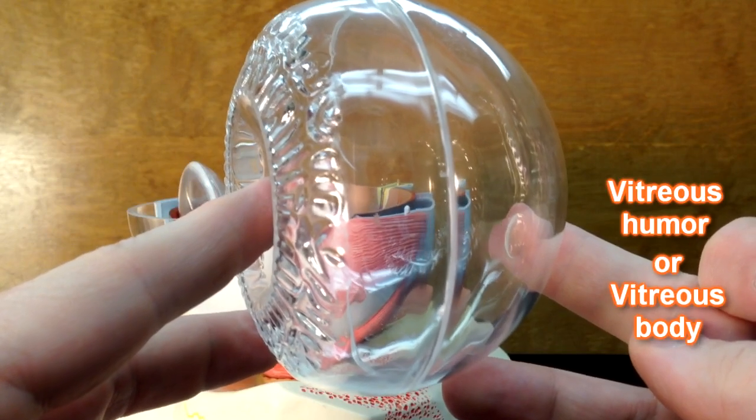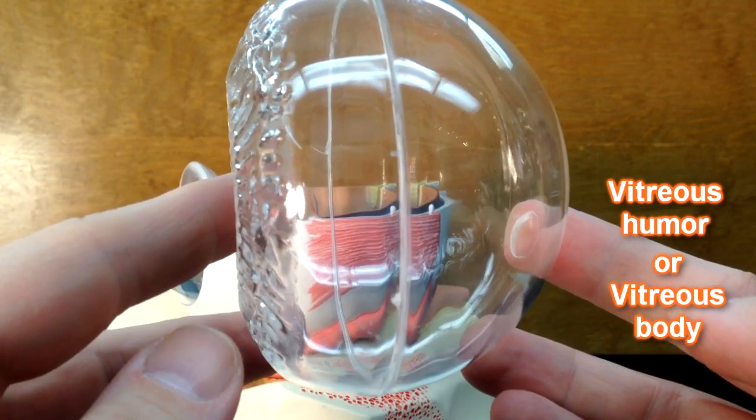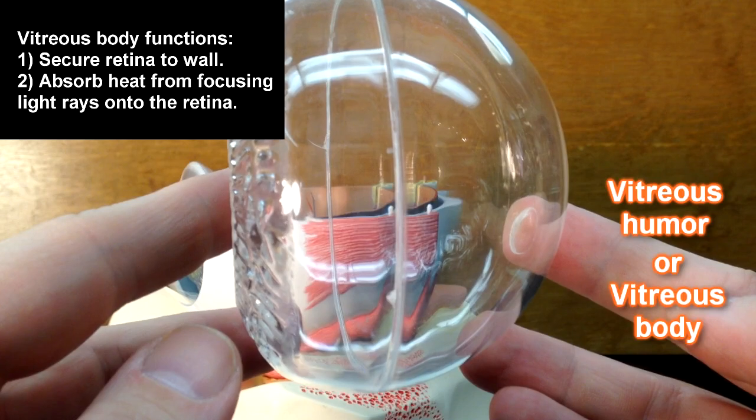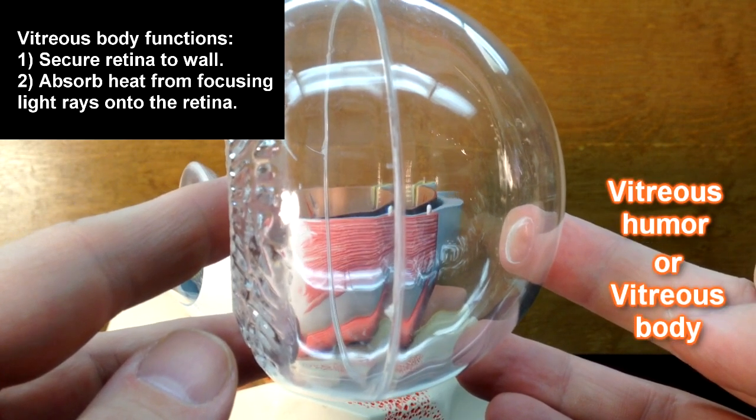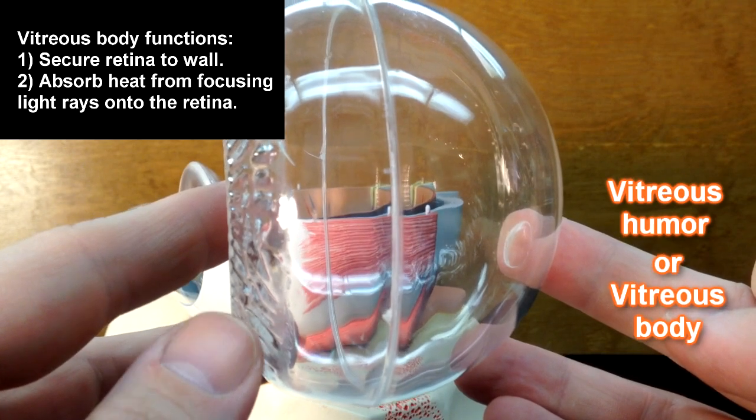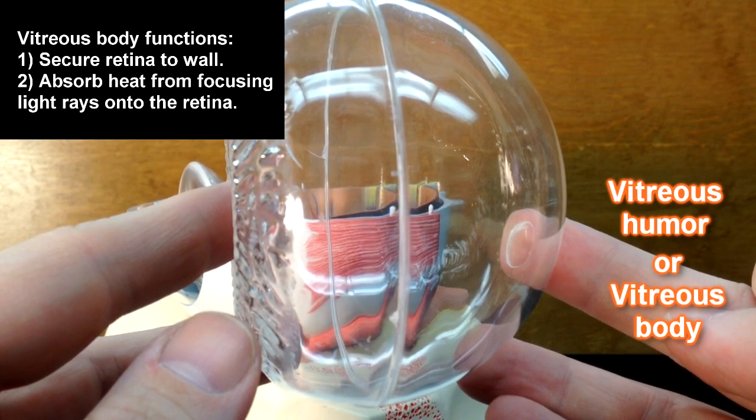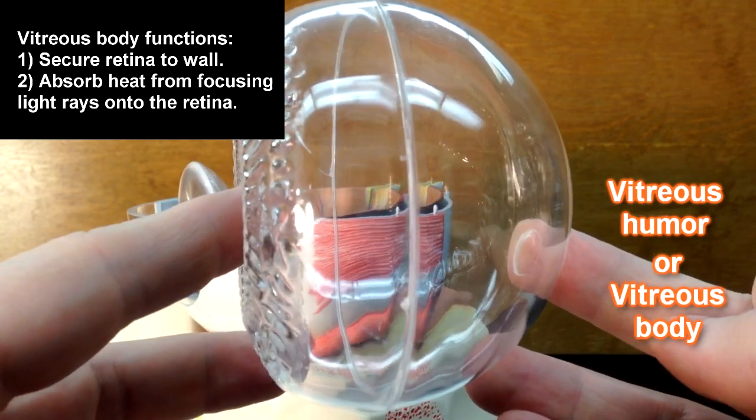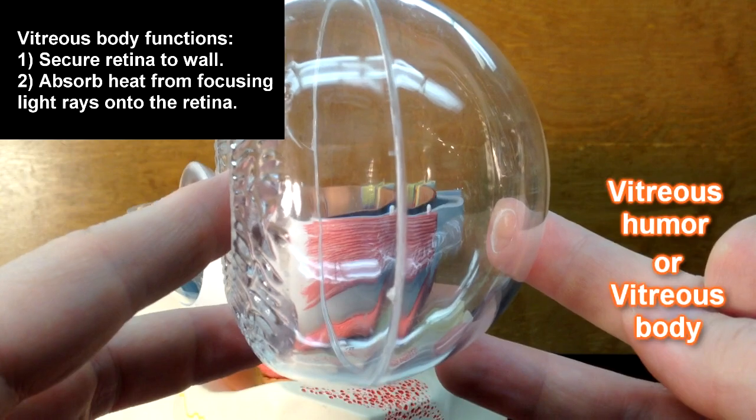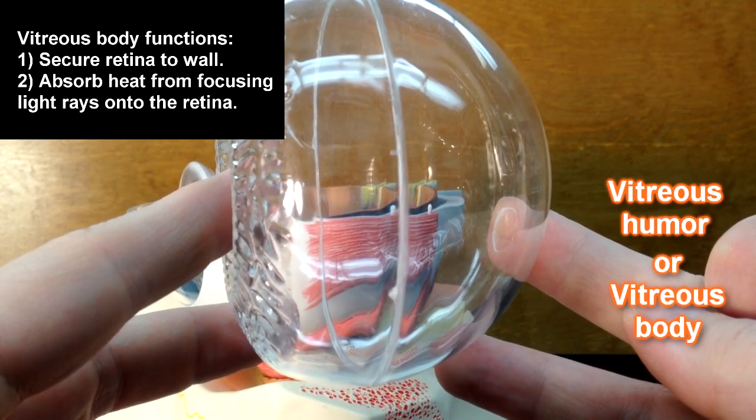This vitreous body has a couple of functions. One of the things it will do is help to hold the retina onto the back of the eye. The only place the retina is attached is where the nerve fibers exit the back of the eye to make the optic nerve. Another thing that this will do is absorb the heat generated by the light rays so the retina is not damaged.